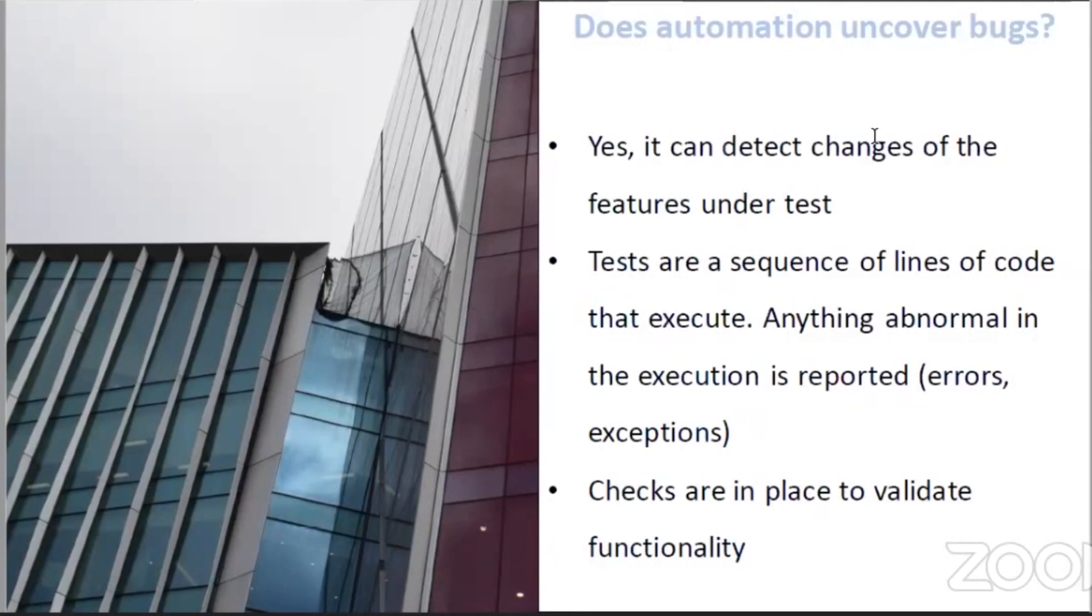So automation doesn't cover bugs in your features, especially if, let's say, somebody else changed something that is affecting your features. You know, many times when you're going to production, for example, many teams are going at the same time.